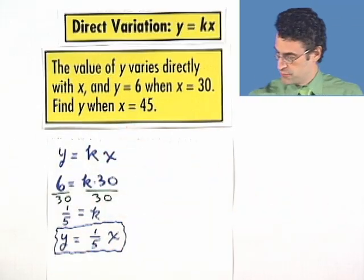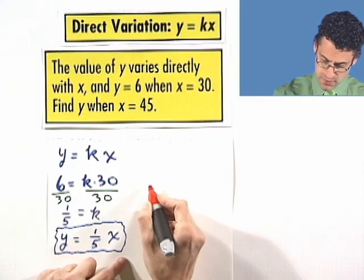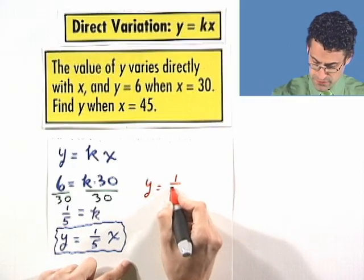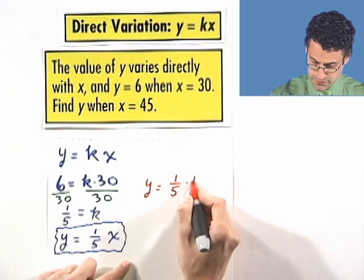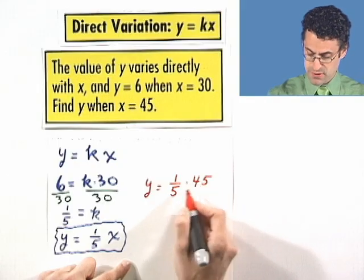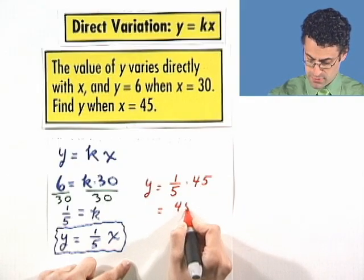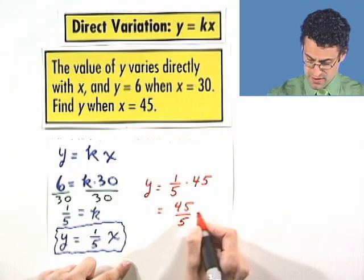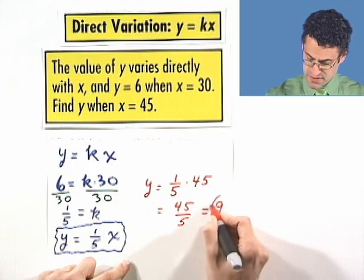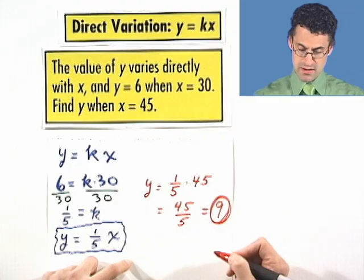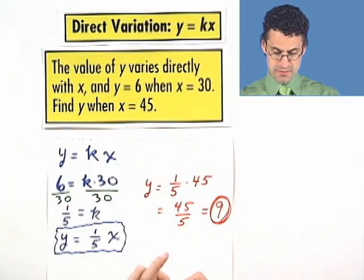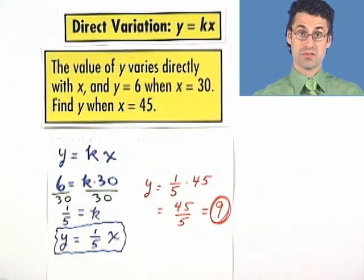So if I plug in 45 for x, I see that y equals one-fifth times 45, and so that's the same thing as 45 divided by 5, which is 9. And so the answer is 9. When x is 45, y is going to be 9, given that they vary directly and they satisfy these two things.